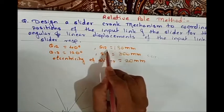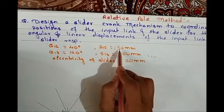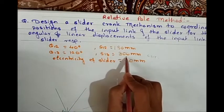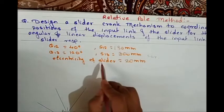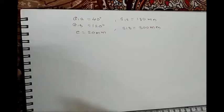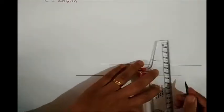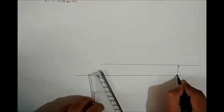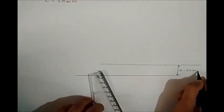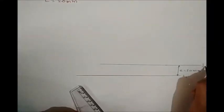The slider displacement s 1-2 is given as 180 mm, s 1-3 is given as 300 mm, and the eccentricity of the slider is given as 20 mm. To start designing the slider crank mechanism, first draw two reference lines L1 and L2 with an eccentricity or offset distance of 20 mm between them.